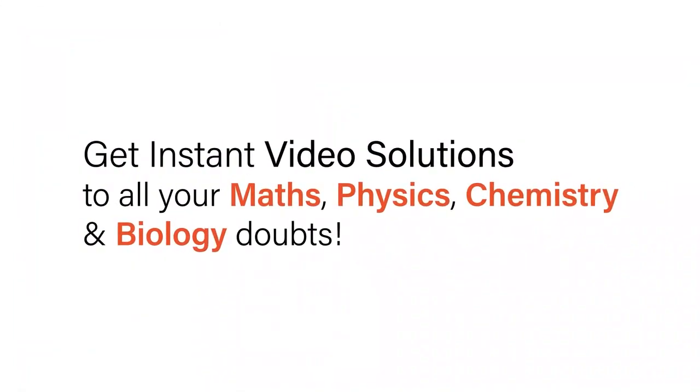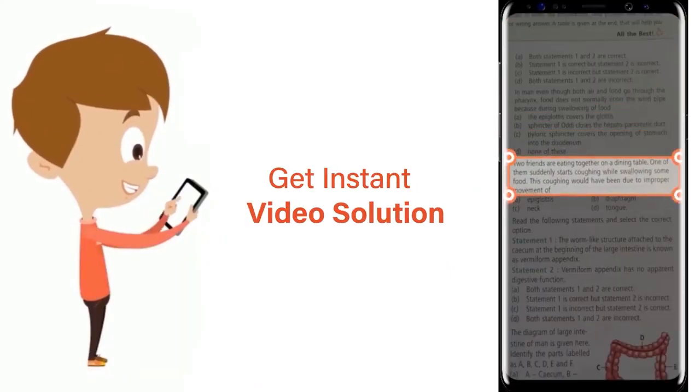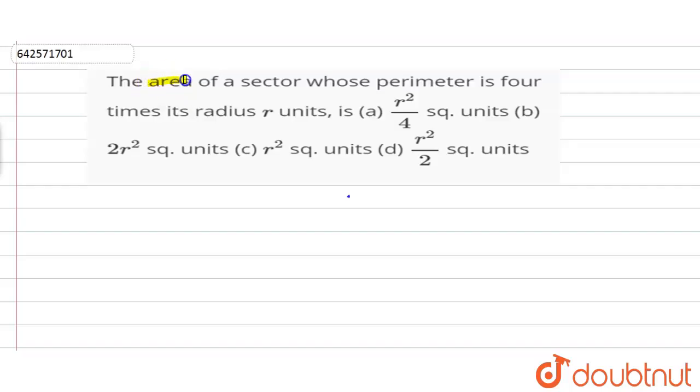With Doubtnut, get instant video solutions to all your maths, physics, chemistry and biology doubts. Just click the image of the question, crop the question and get instant video solution. Download Doubtnut app today. So we have to find the area of sector whose perimeter is four times its radius r units.